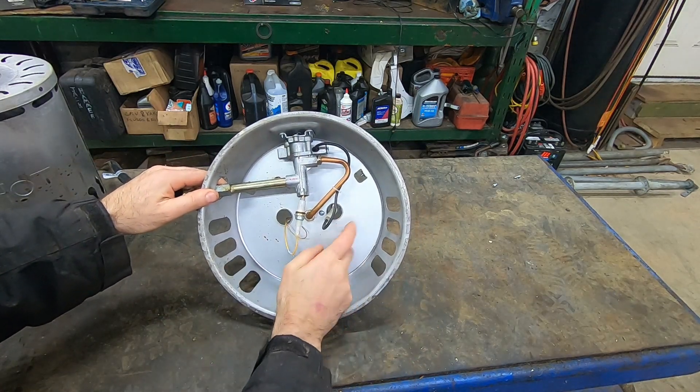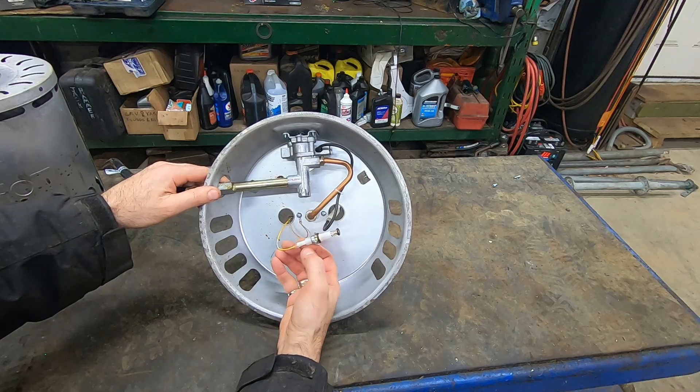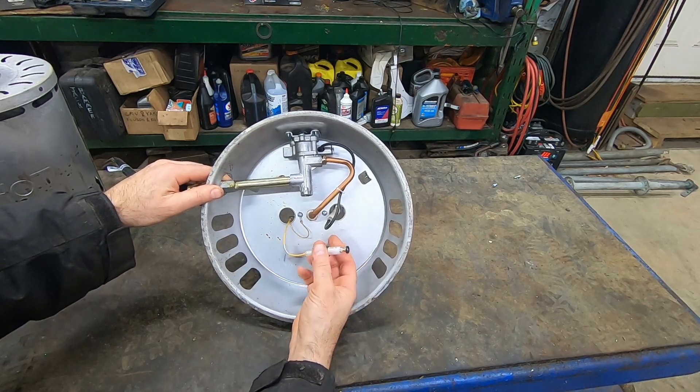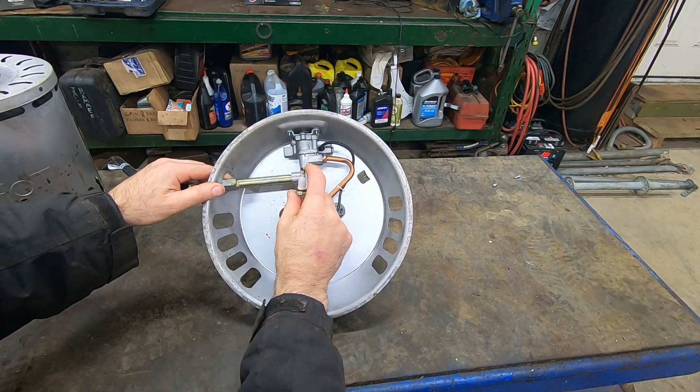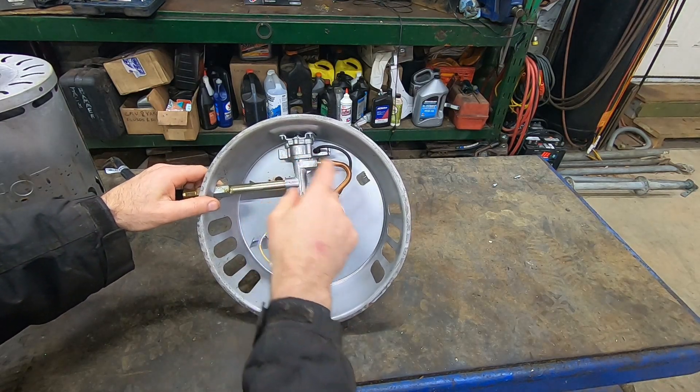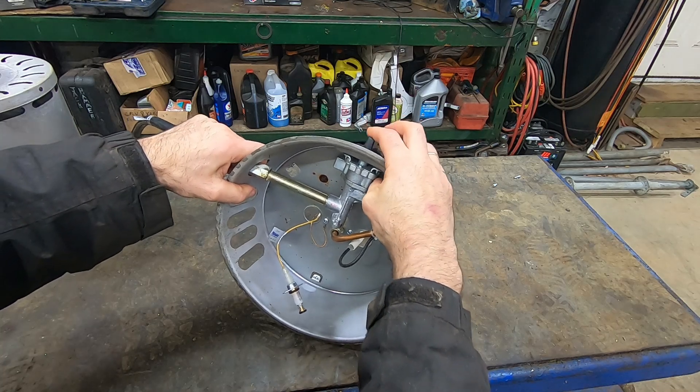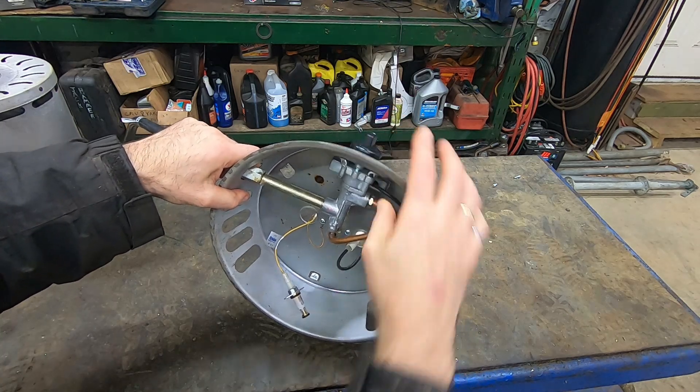One that connects to the chassis of the heater and one that connects to this electric solenoid. And when the voltage is applied by that thermocouple, it pulls this solenoid back. And when that plunger is pulled back, it allows fuel to flow even when you don't have your hand pushed on the control. When I press on this, there's a lever in here that's actually pressing on this to allow fuel to flow.